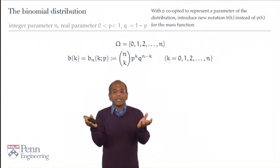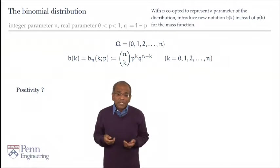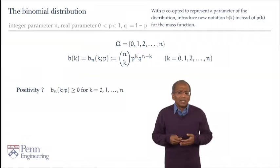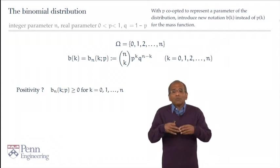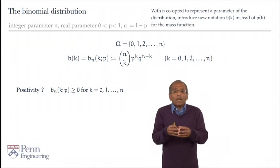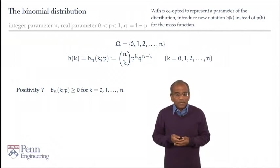These are putative atomic probabilities for an experiment. Are these honest? Are these legitimate? Naturally enough, we want to verify positivity and normalization. Let's start with positivity first. Well, again, this is trite. The expression b sub n of k and p involves a binomial coefficient which by definition is non-negative, and involves powers of positive quantities, and therefore it is strictly positive. And therefore, these atomic probabilities are all positive for each of the values k running from 0 through n. Positivity is tritely satisfied.